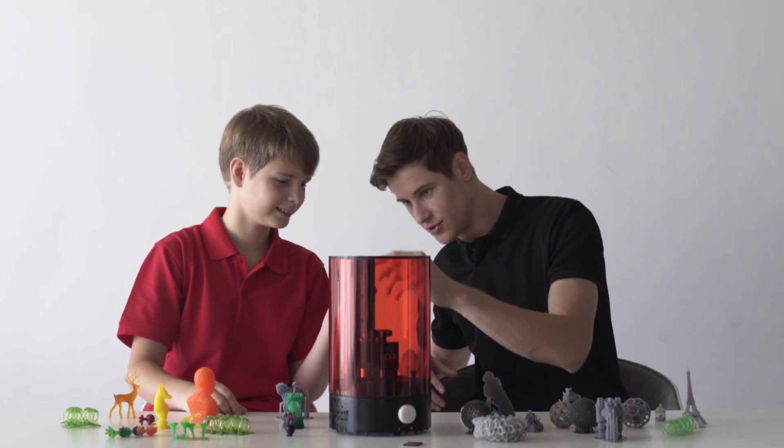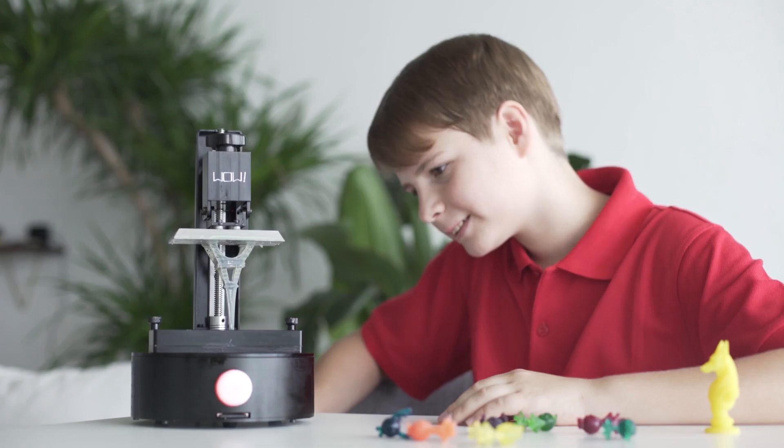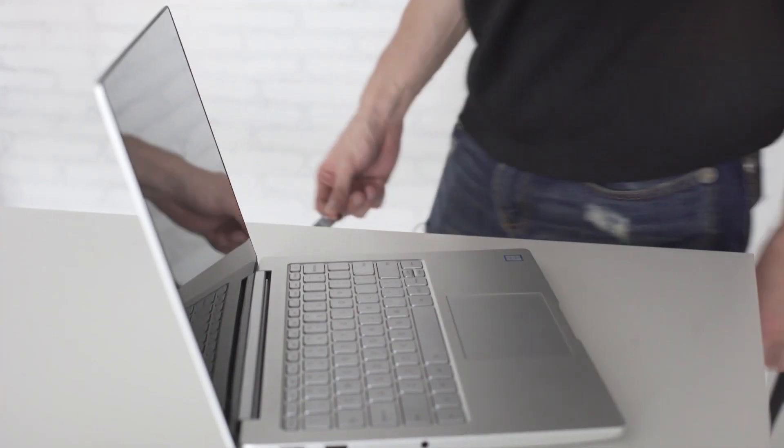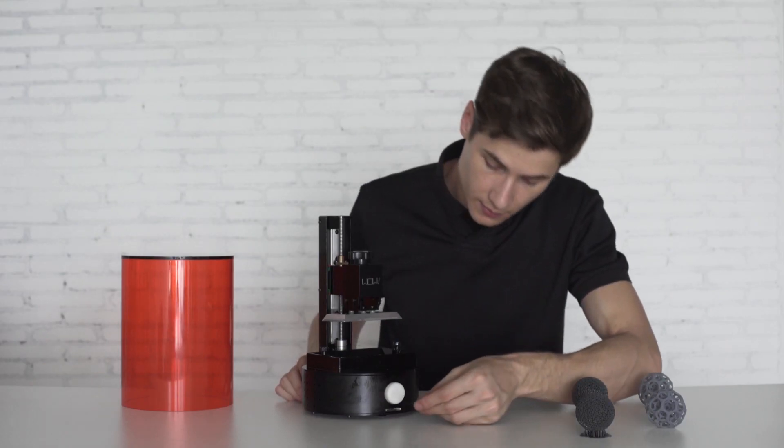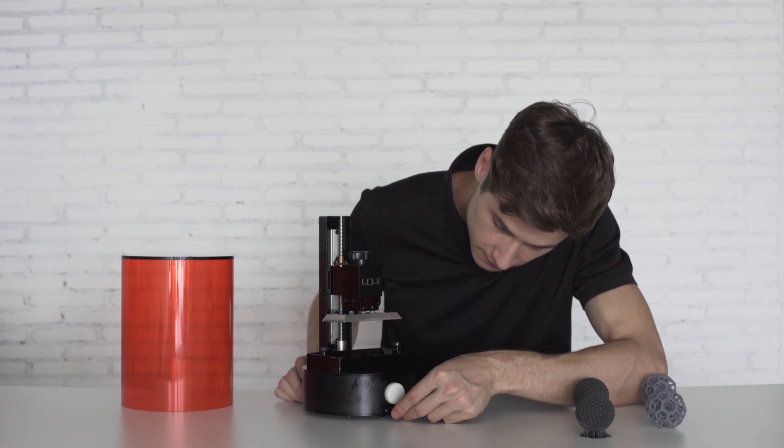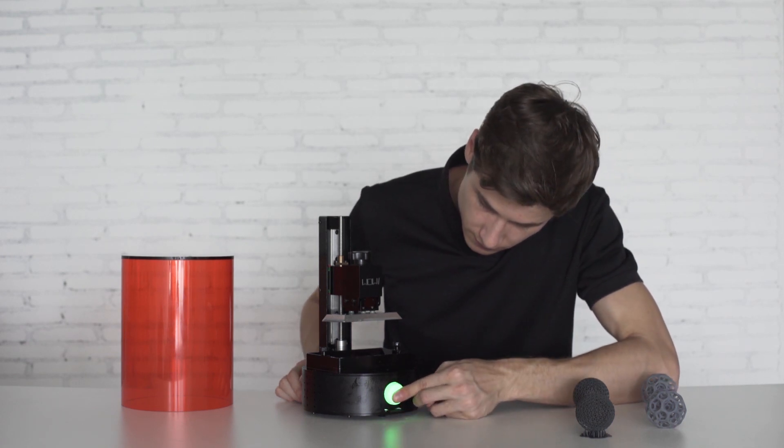SparkMaker is designed as a plug-and-play standalone printer. Starting to print is super easy. Just download the design file from computer to an SD card, insert it to SparkMaker with resin filled, press the button and you are all set.